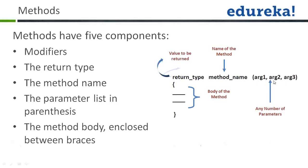You pass integer a and integer b as parameters, and those values will be used in the body of the method. In the body you provide the definition of the operation that has to be performed. The functionality of the method will be present in the body, which is enclosed between curly braces.